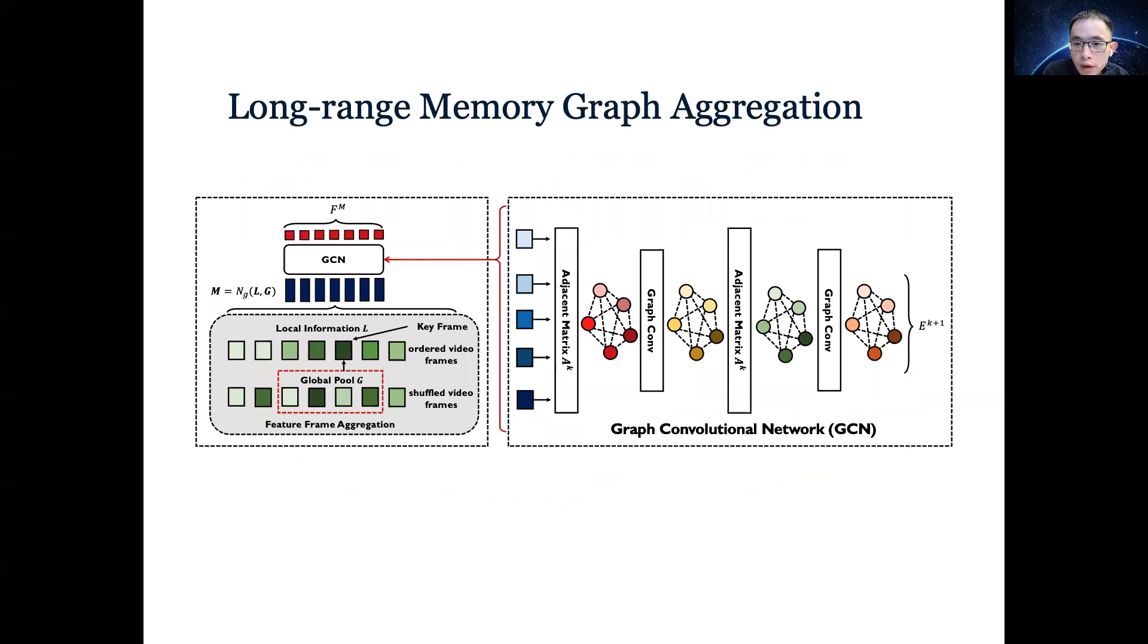The overview of the long-range memory graph aggregation module is shown as follows, which includes two operations: frame feature aggregation and graph reconstruction. We randomly select tiled frame features from the shuffled order index frame feature maps and then cache the selected features to form a global memory bank. By leveraging this cached information, the global local feature aggregation module enables the keyframes to access more complex spatial temporal information.